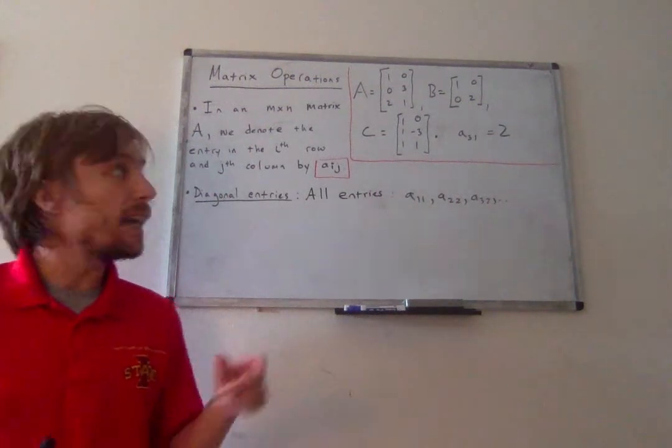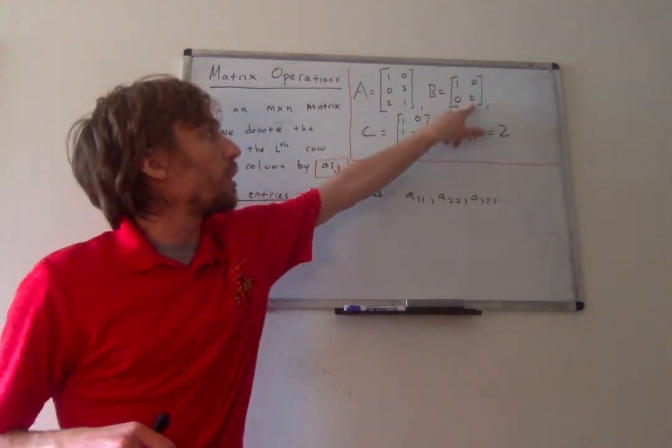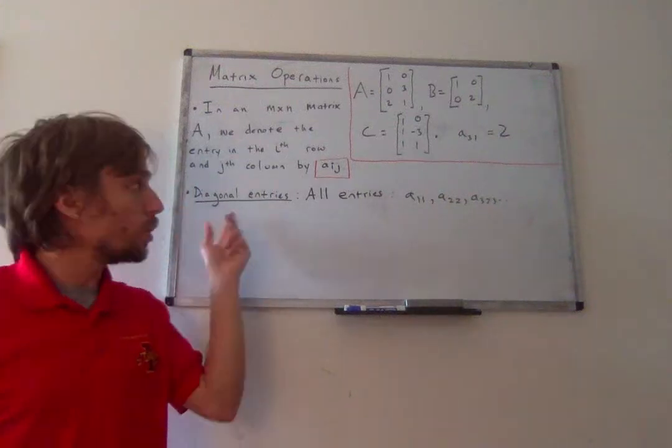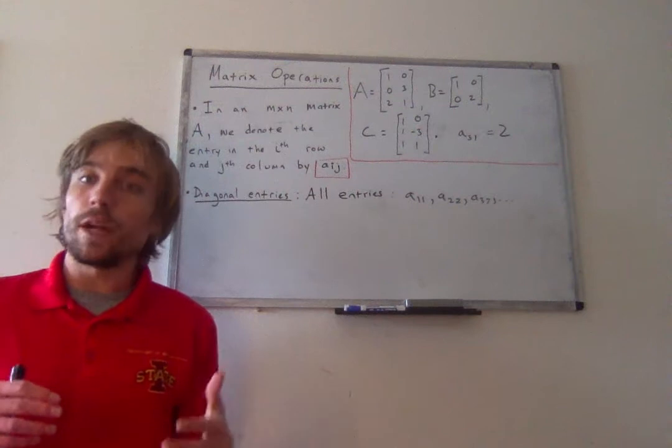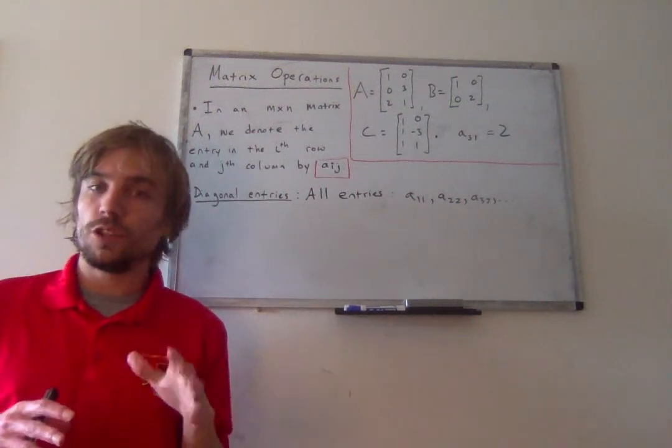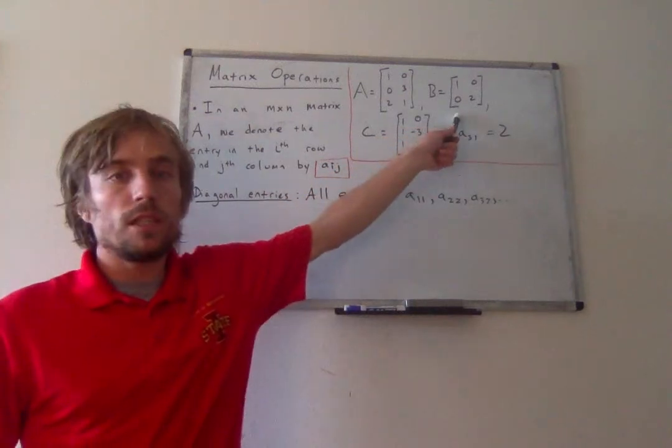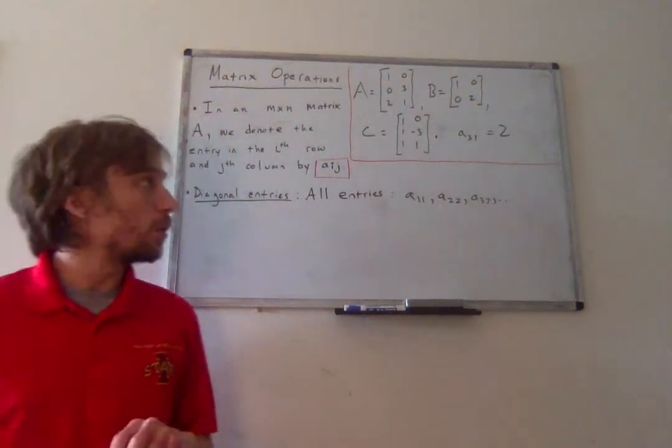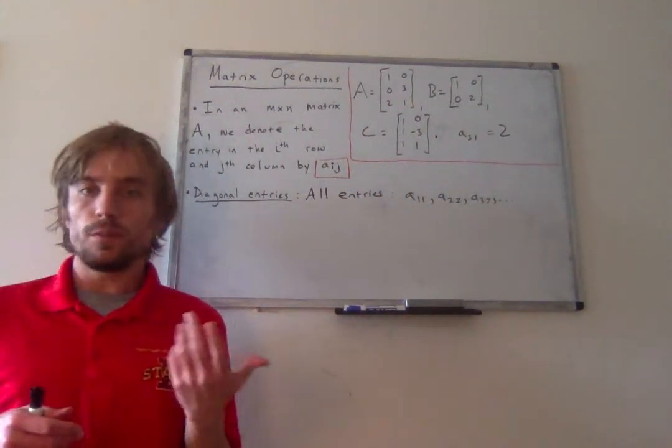So for example, in A, the diagonal entries would be 1 and 3. In B, they would be 1 and 2. And in C, they would be 1 and negative 3. Usually, we will talk about diagonal entries in the context of square matrices. We haven't officially introduced that term yet. But a square matrix is just a matrix whose number of columns and rows are equal. So here, B would be a square matrix because it has 2 rows, 2 columns.